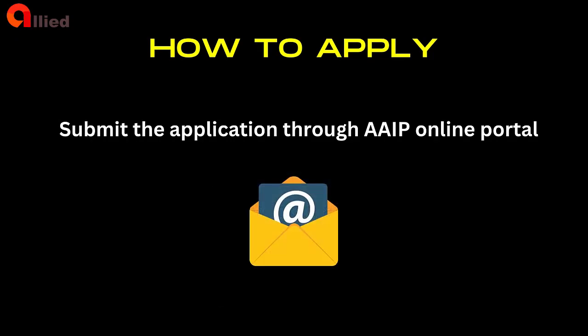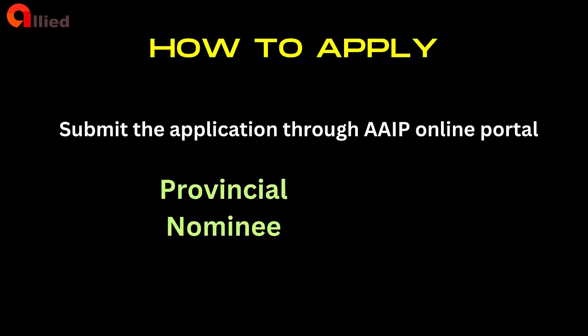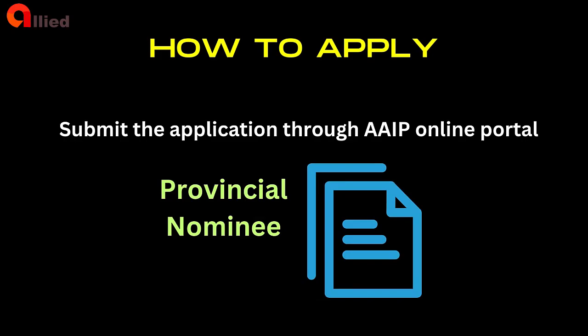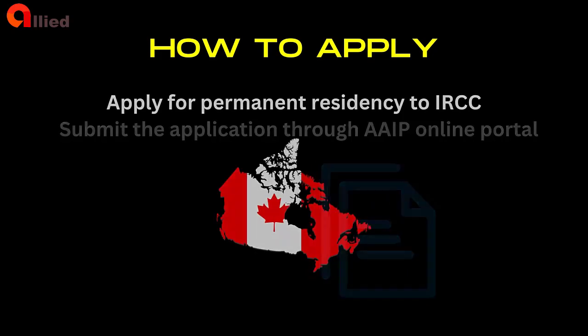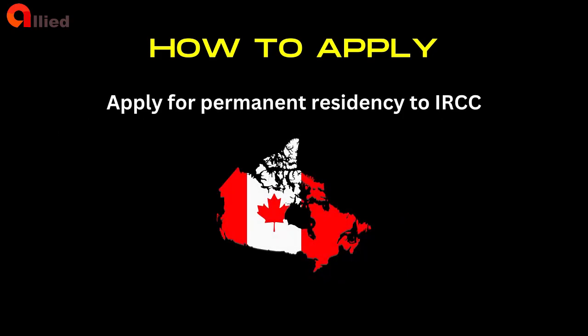The application will be reviewed and the candidate will be notified if they are eligible for nomination. You will receive a decision on your application by email. If your application is approved, you will become a provincial nominee and receive a nomination package by email. Make sure you read all documents in the package and save a copy of your nomination certificate. After receiving the nomination certificate from Alberta, the nominee must apply to IRCC for permanent residency. The federal government makes the final decision on permanent residency applications, and a nomination by the province does not guarantee an approved permanent residency application.